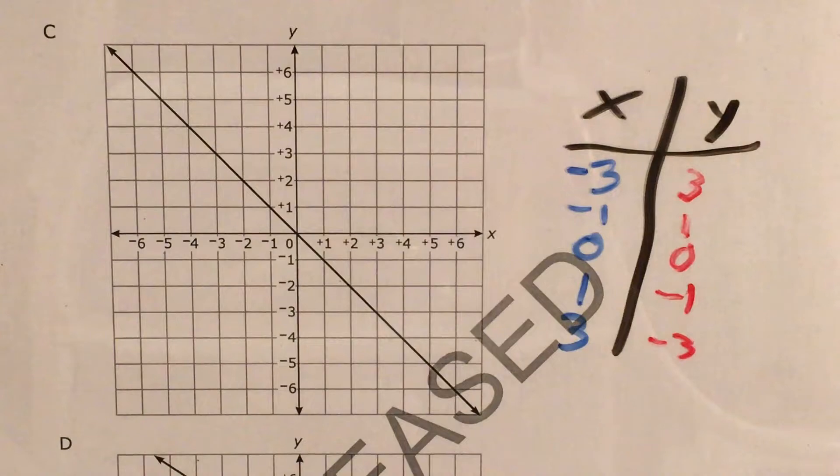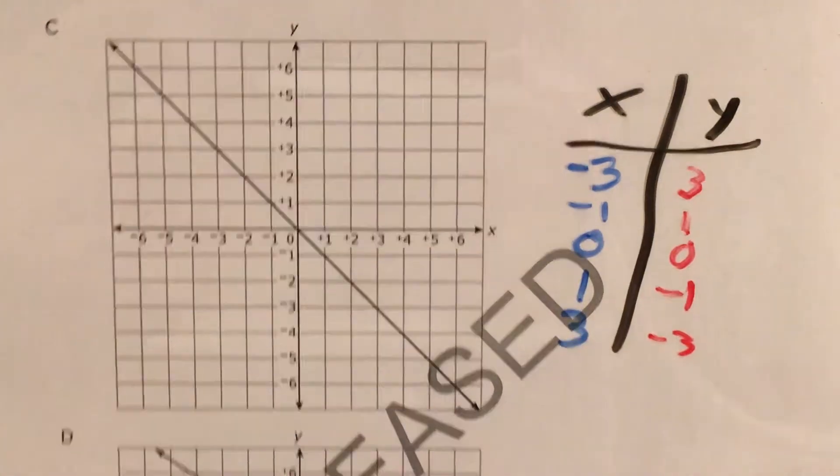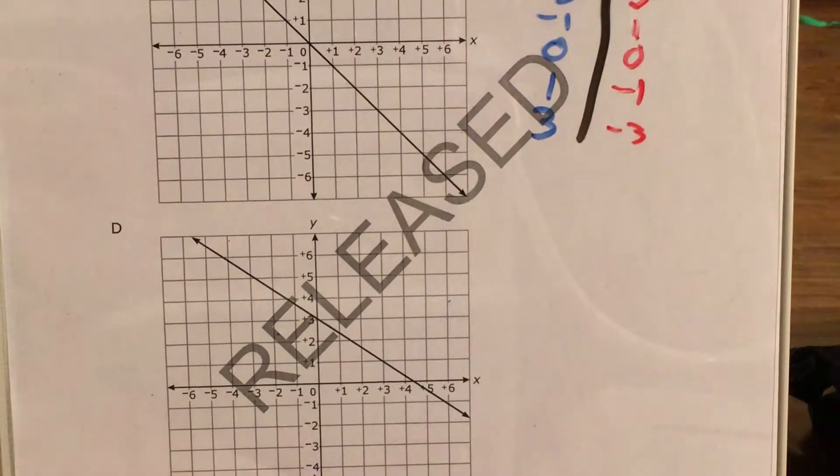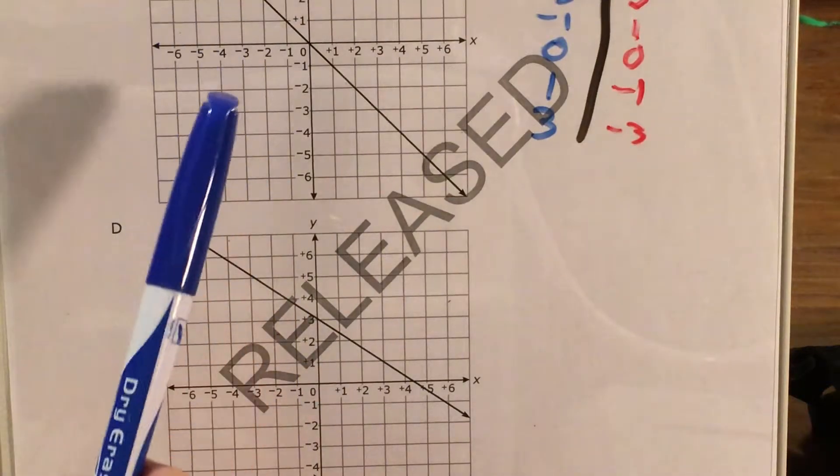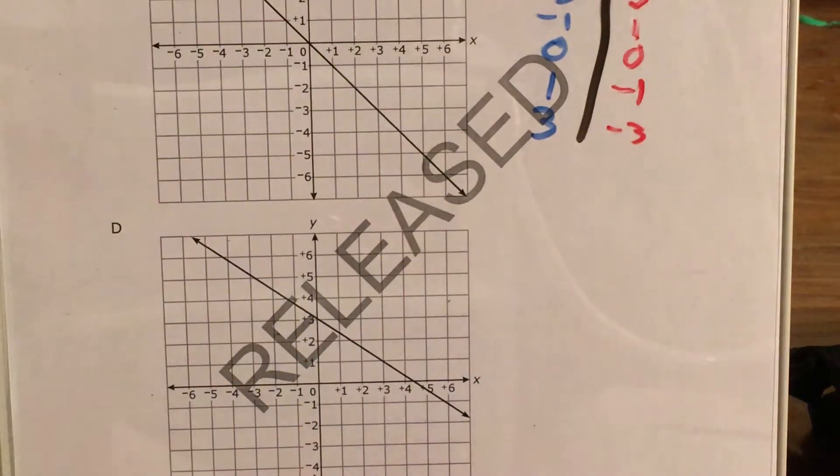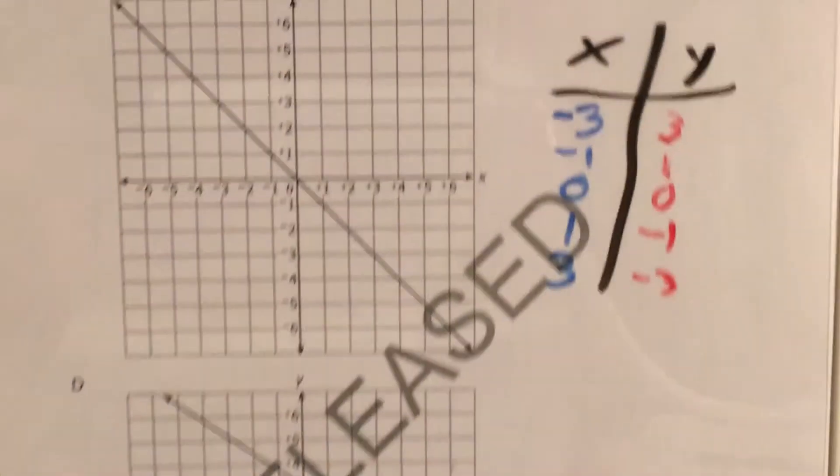So it looks like both choice C and choice D kind of have that top left to bottom right type line that we're looking for. But let's go ahead and test out our points anyway.